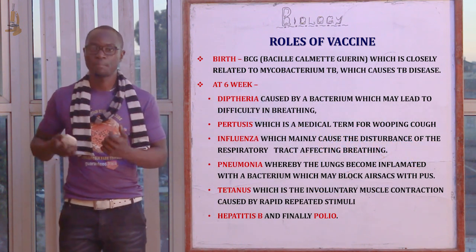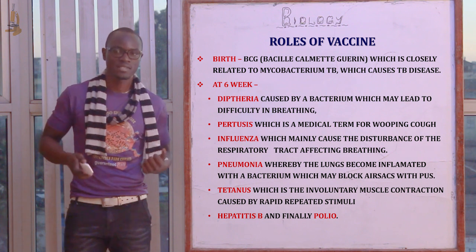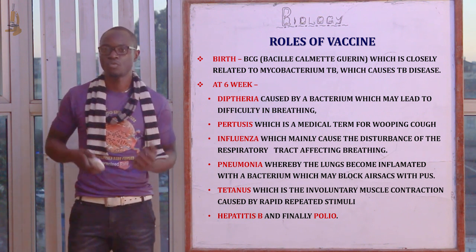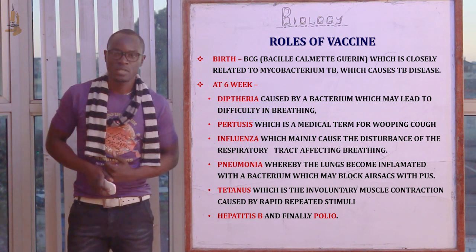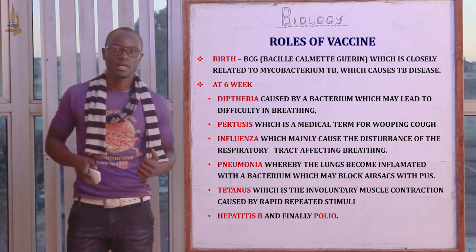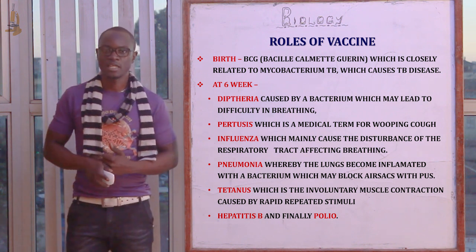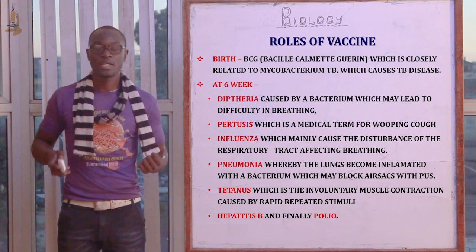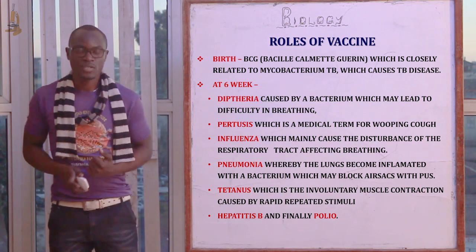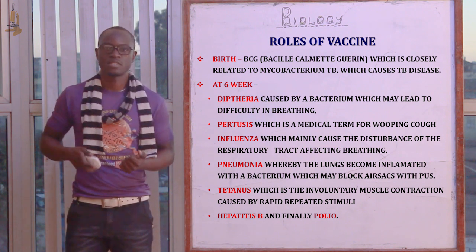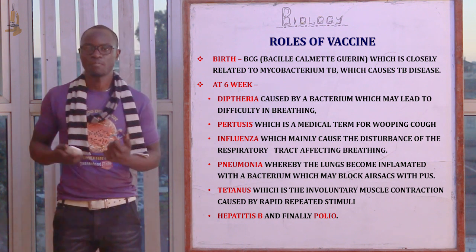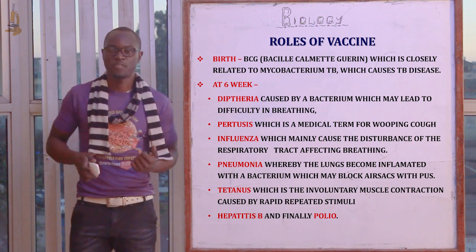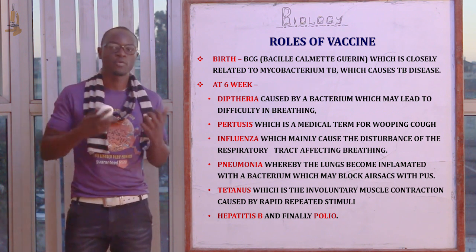At birth, the child is given BCG — Bacillus Calmette-Guérin — which is closely related to Mycobacterium TB that causes tuberculosis. At six weeks, the child is immunized against diphtheria, caused by bacteria and may lead to difficulty in breathing; pertussis, the medical term for whooping cough; influenza, which causes disturbance of the respiratory tract; and pneumonia, where the lungs become inflamed with bacteria that may block the air sacs by producing pus.